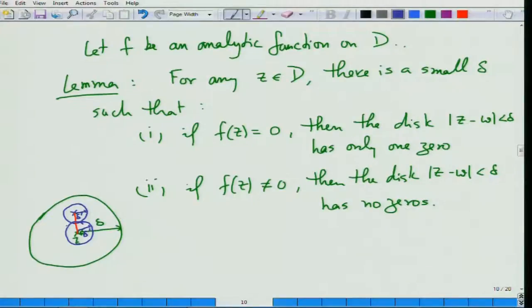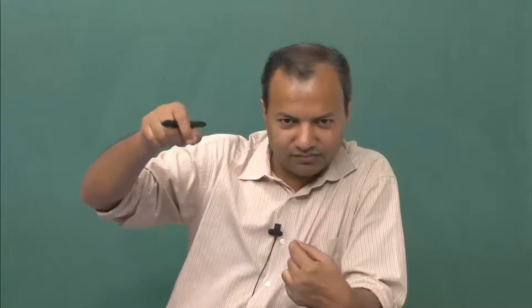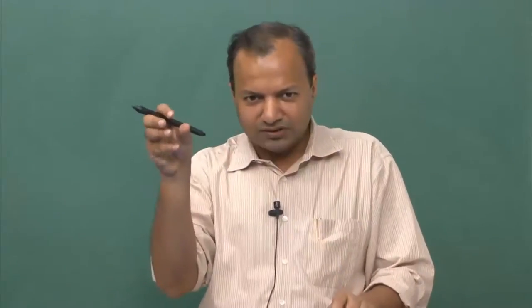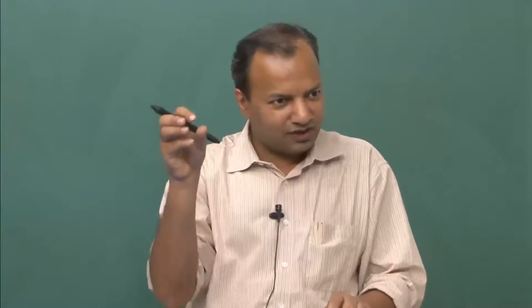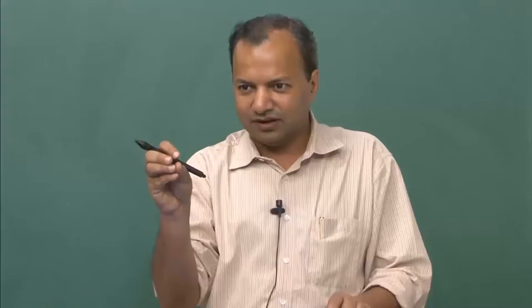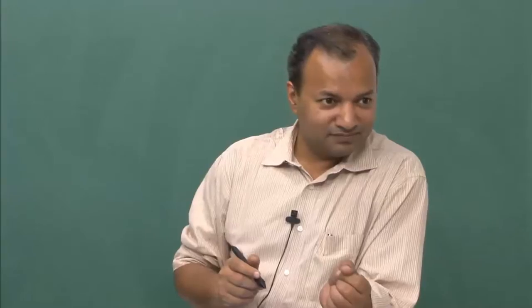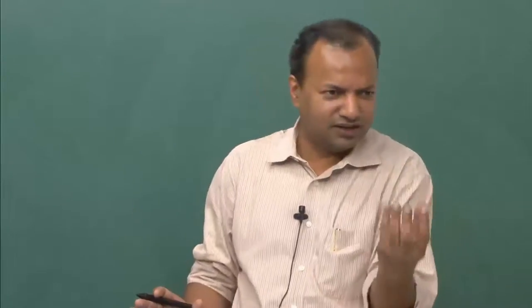With this lemma in place, you can argue that in a finite domain there can be only finitely many zeros, because if not, there would be infinitely many zeros. Keep dividing the domain into smaller pieces — every piece with infinitely many zeros keeps shrinking, which violates this lemma at some point. We need compactness essentially — a finite disk is a compact set.